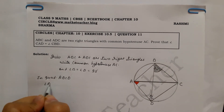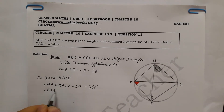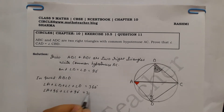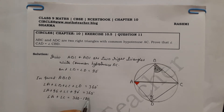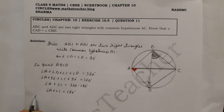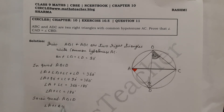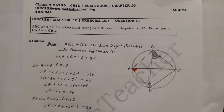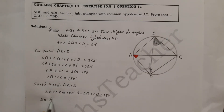We know that the sum of all four angles of a quadrilateral is 360 degrees. Now put in the B and D values: angle A plus 90 degrees plus angle C plus 90 degrees equals 360 degrees. 90 plus 90 is 180, so transferring 180 to the other side gives us angle A plus angle C equal to 180 degrees, and angle B plus angle D also equals 180 degrees.